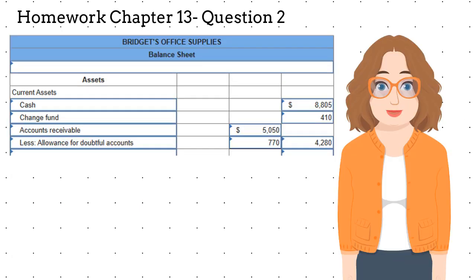We start with the asset side of the balance sheet and enter the current assets of cash for $8,805 and the change fund of $410. Next, we'll enter the accounts receivable and subtract the allowance for doubtful accounts. Hope this gives you a good start.